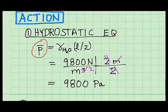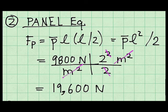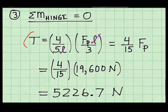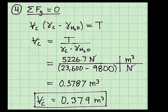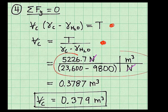The pressure at the depth of the centroid is 9,800 pascals. The resultant force due to pressure is 19,600 newtons. The tension in the cable is 5,227 newtons. To find the volume of concrete, I did some steps of algebra, substituted in numbers, carried and cancelled units, and the final answer is right here. The volume of concrete is 0.379 cubic meters.